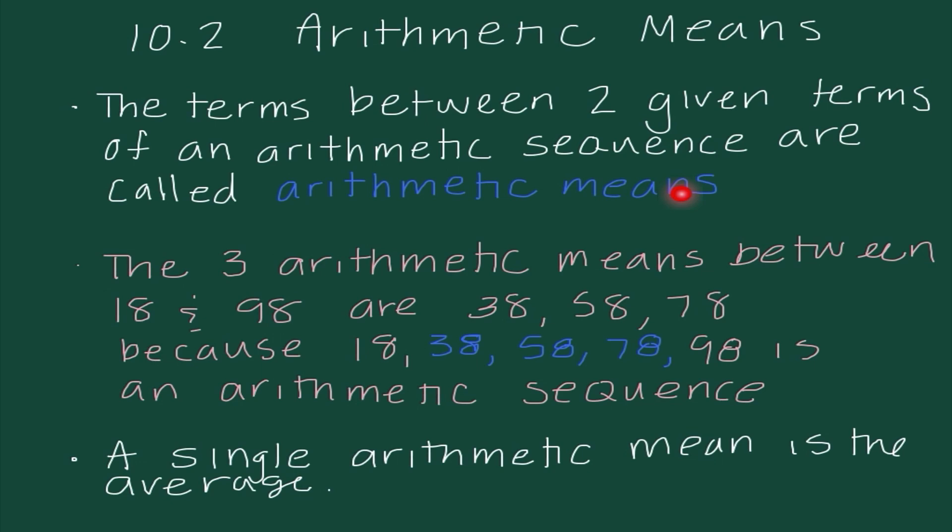And to kind of give some context to that, we would say the three arithmetic means between 18 and 98 are 38, 58, and 78. Because 18, 38, 58, 78, 98 is an arithmetic sequence. I can see that I'm adding the same common difference each time. If they ever ask us to find a single arithmetic mean between terms, all that is is finding the average. So I would just take those two values and add them and divide by 2.